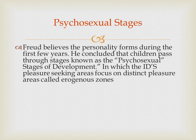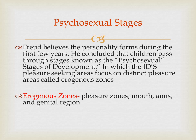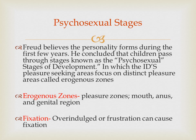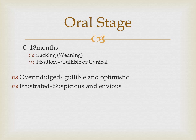Freud begins to talk about the psychosexual stages of development. Freud believed that our personality forms during the first few years. He concluded that children pass through stages known as the psychosexual stages of development, in which the id focuses on distinct pleasure areas called erogenous zones — pleasure zones such as the mouth, the anus, and the genital regions. If we are overindulged in something, or frustrated because a need isn't being met, it can cause a fixation — feeling stuck in a certain area. There are five stages you need to know.